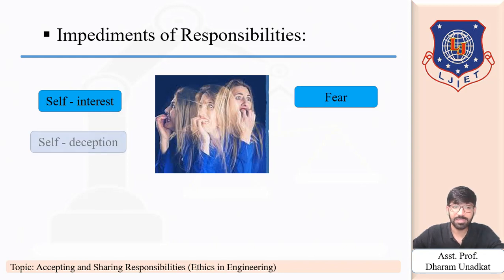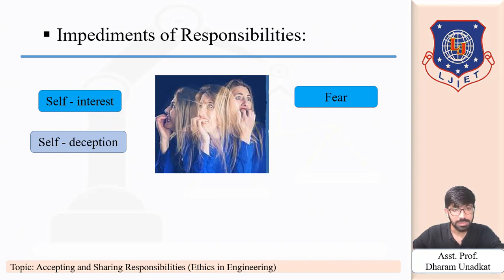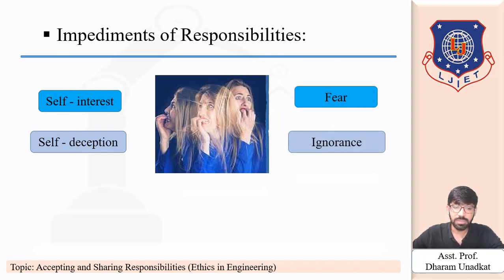Third is self-deception. Sometimes engineers do things which may be unethical because they may have self-deception excuses like 'I am doing this for my organization' or 'it works this way only.' Such self-deceptions prevent them from fulfilling their responsibility as a professional. Fourth is ignorance — lack of knowledge that a design is not safe enough naturally acts as a barrier to an engineer's responsible action.